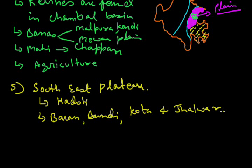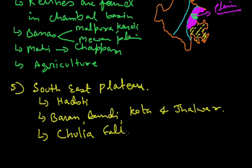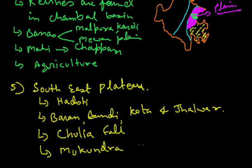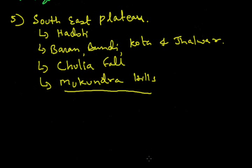Except the Ramganj Mandi, all other tehsils of Jhalawad come in the Haruti plateau. Many landforms are formed by rivers here; the main rivers flowing are the Kali Sin, Parvati, Chambal, and Ghoda Pachad. We also see the famous Chulia Fall near the Bhans road Gada, which is very near to Rawatbhata. Going from Kota towards Jhalawad, we also encounter the Mukundra Hills. This is how we complete the physical divisions of Rajasthan.